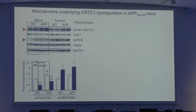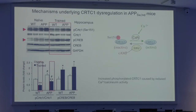The mechanism underlying these CRTC1-dependent transcriptome changes is that the phosphorylated inactive form of CRTC1 is increased in APP mice — both in naïve conditions and especially after training, where phosphorylation and activation of CRTC1 is impaired. We think this is because alterations in calcium-mediated phosphorylation of CRTC1 decrease its activation in the hippocampus of these APP transgenic mice.